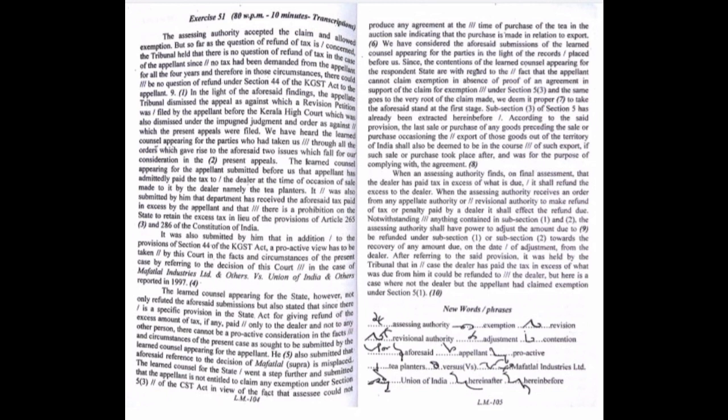When an assessing authority finds, on final assessment, that the dealer has paid tax in excess of what is due, it shall refund the excess to the dealer. When the assessing authority receives an order from any appellate authority or revisional authority to make refund of tax or penalty paid by a dealer, it shall effect the refund due.